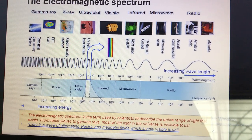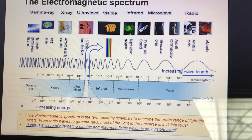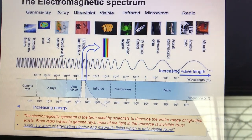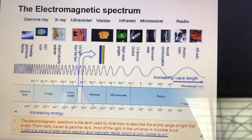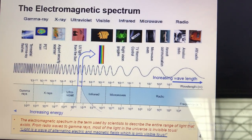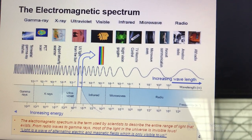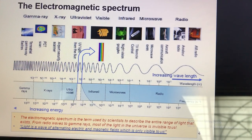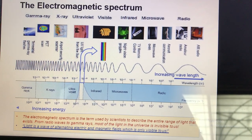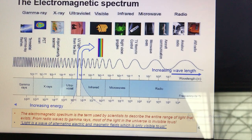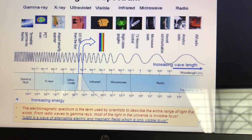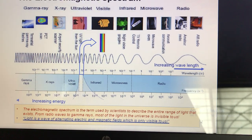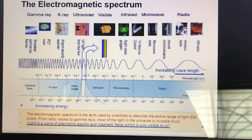The electromagnetic spectrum is the term used by scientists to describe the entire range of light that exists — from radio waves to gamma rays. Most of the light in the universe is invisible to us. Light is a wave of alternating electric and magnetic fields, and only a small portion is visible to us.